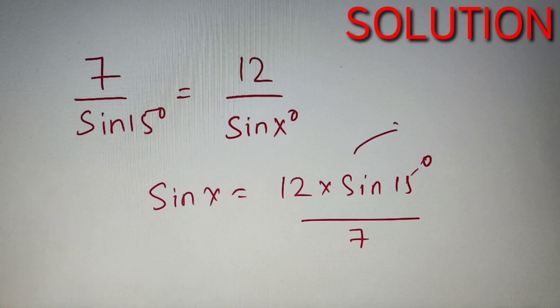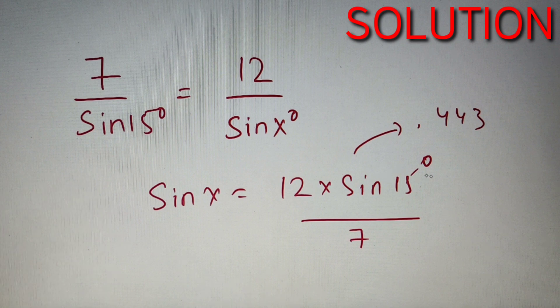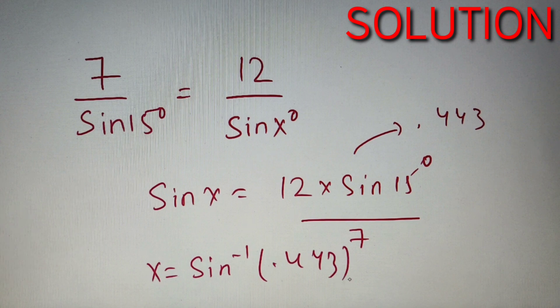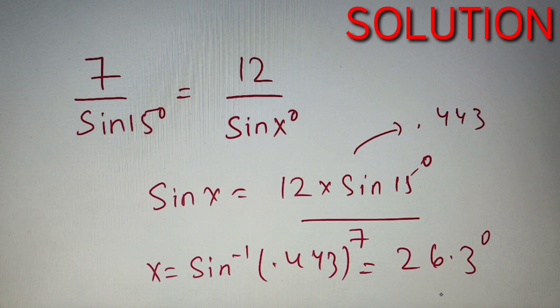Now in calculation, this value comes out to be 0.443. So we can say that sine X is equal to 0.443. Now we know that if sine X is equal to Y, then X is equal to sine inverse of Y. So the value of X is equal to sine inverse 0.443. Now upon calculation, this value comes out to be 26.3 degrees approximately. So the value of X for our question is equal to 26.3 degrees.